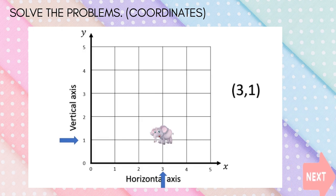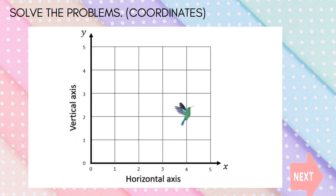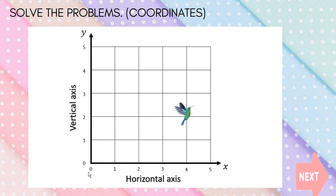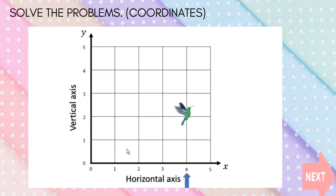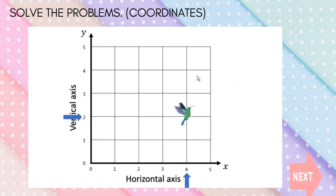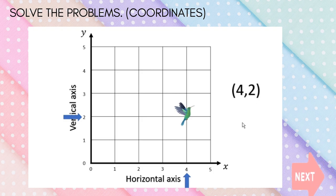Let's look at the next example: how to find the coordinates of the bird. First, look at the X axis: 1, 2, 3, 4. Then look at the Y axis: 2. So the answer is (4, 2). Always remember to write the X axis first, followed by the Y axis.